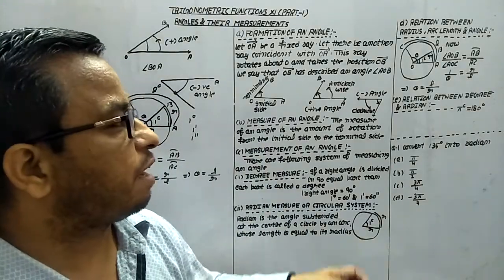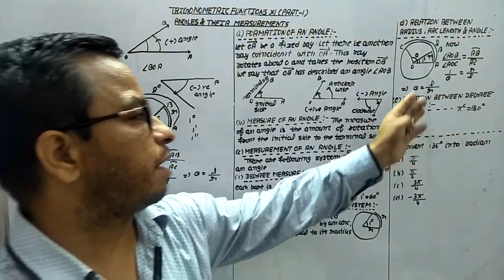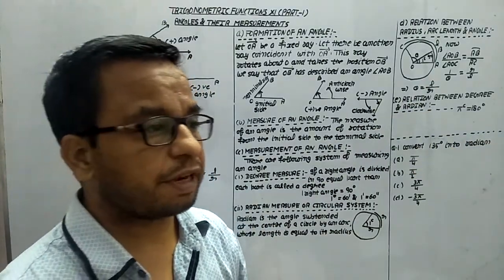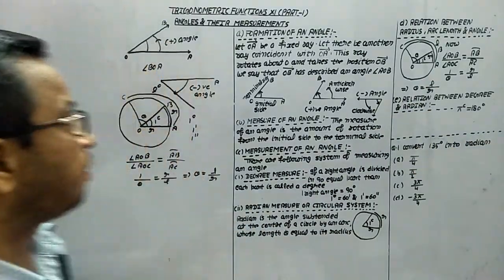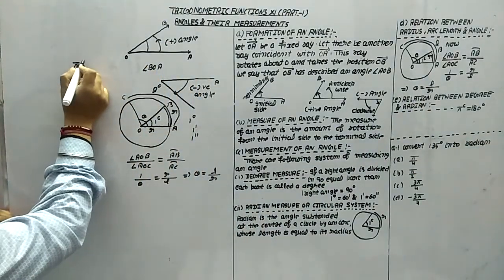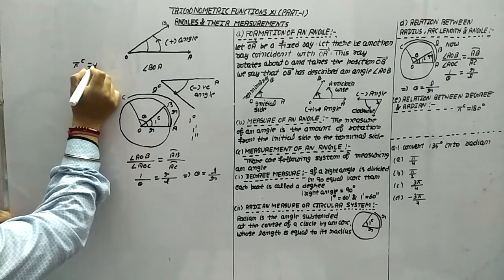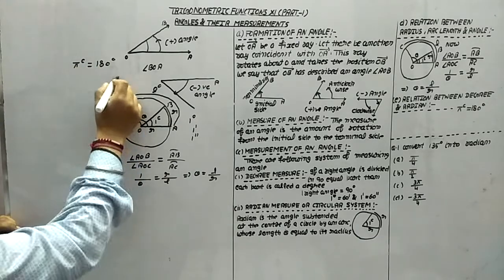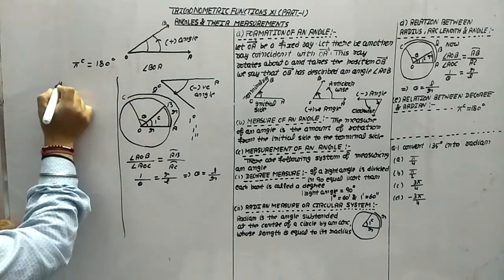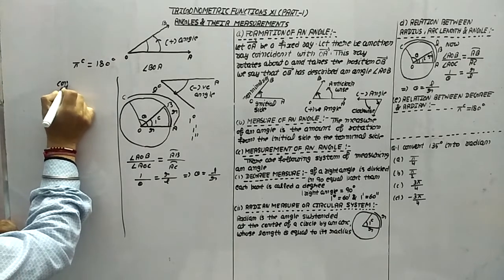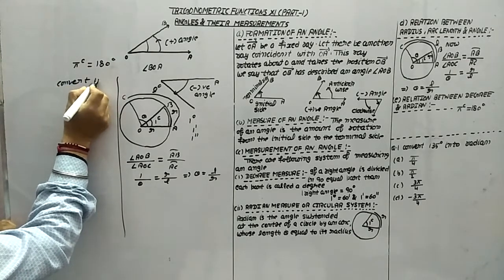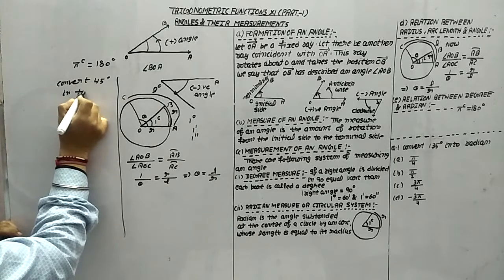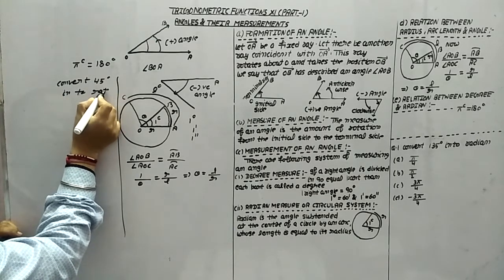In the same way, we can find out the relation between degree and radian. Pi radian is always equal to 180 degrees. Now, different methods — suppose we have to convert 45 degrees into radian. There are two methods. One is the unitary method.